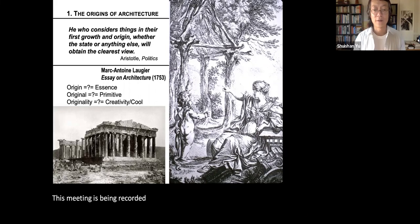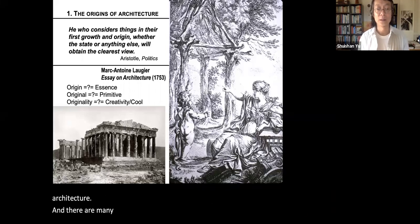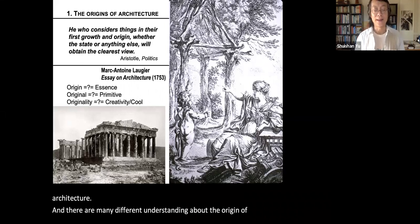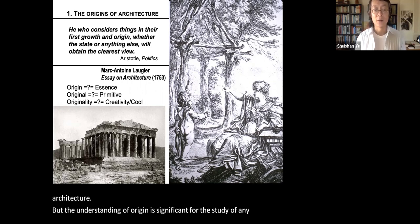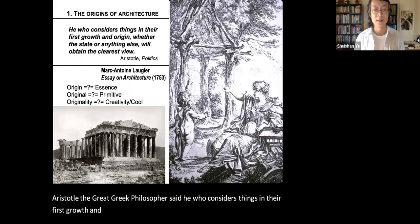One of the issues in architectural history concerns the origin of architecture. There are many different understandings about the origin of architecture, but the understanding of origin is significant for the study of any discipline. Aristotle, the great Greek philosopher, said: 'He who considers things in their first growth and origin, whether the state or anything else, will obtain the clearest view.'